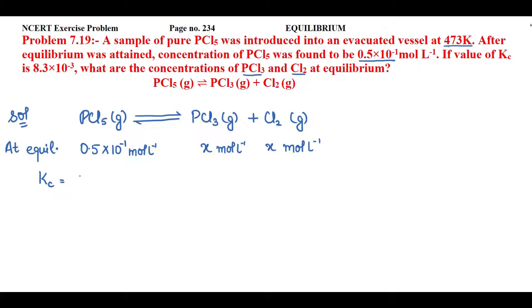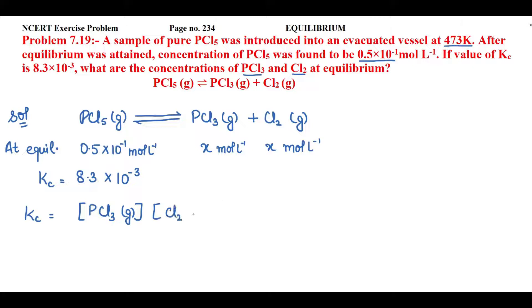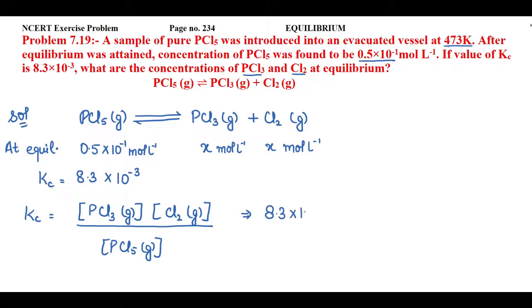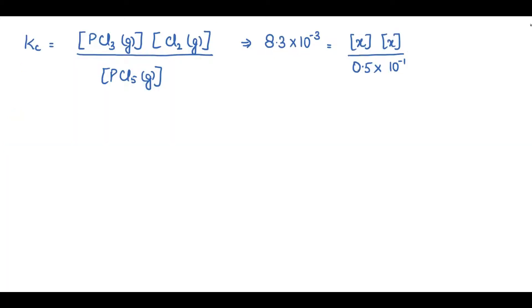The Kc value given is 8.3 × 10⁻³. Now let's write the relation: Kc = [PCl₃][Cl₂] / [PCl₅], since on the product side we have PCl₃ and Cl₂, and on the reactant side only PCl₅ is present. Substituting values: 8.3 × 10⁻³ = (x)(x) / (0.5 × 10⁻¹). Units can be ignored here.